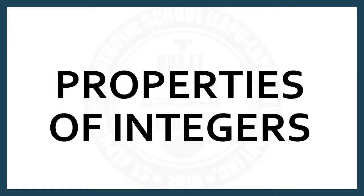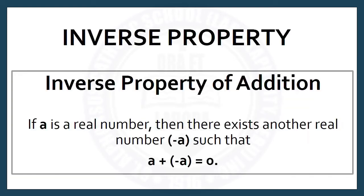Now, let's discuss the 4th property of integers — Inverse Property. First, let's have the Inverse Property of Addition. This property says that if A is a real number, then there exists another real number, negative A, such that A plus negative A is equal to 0.